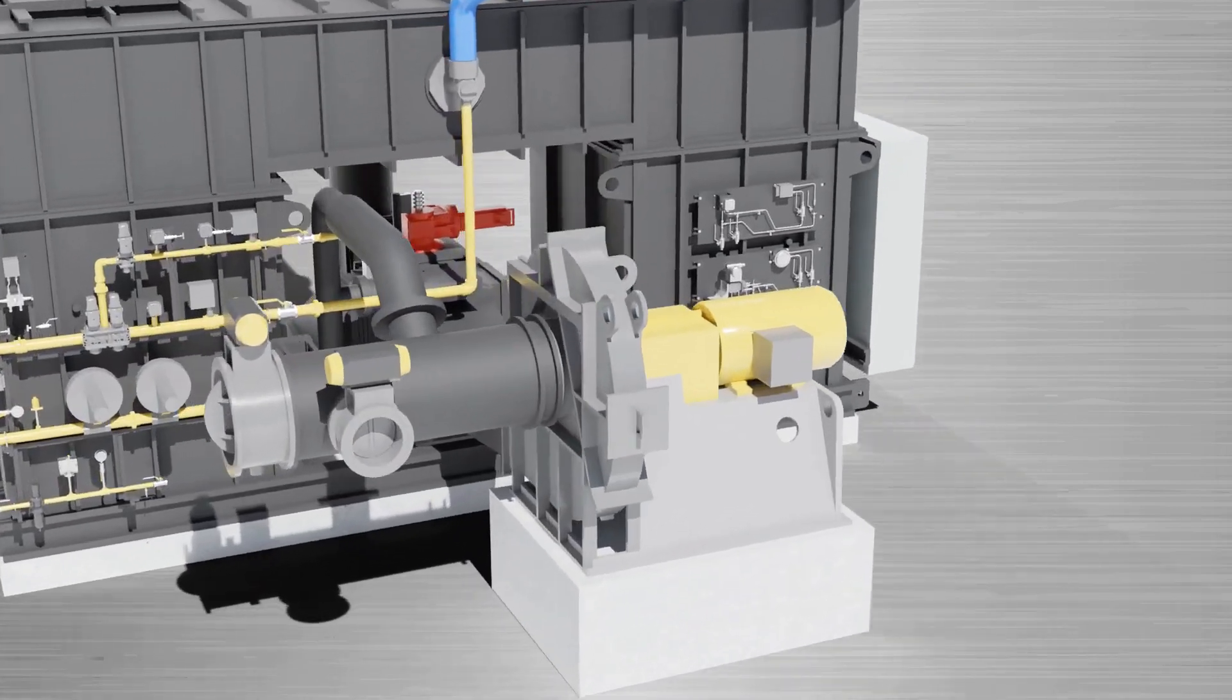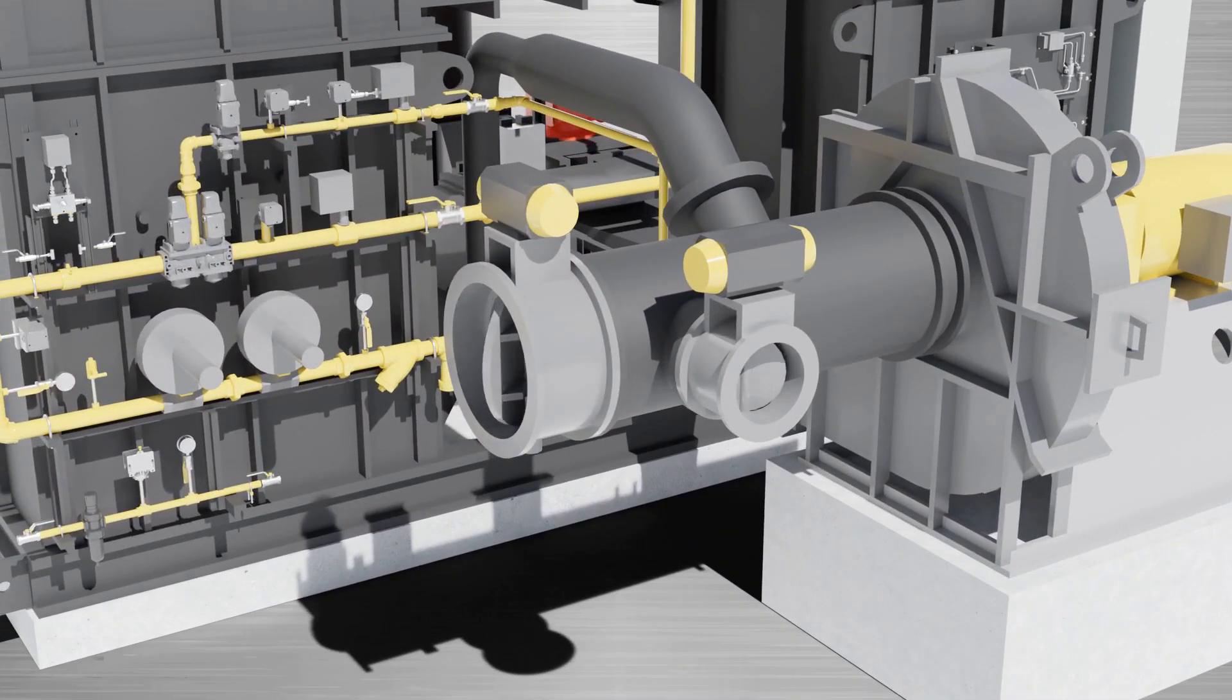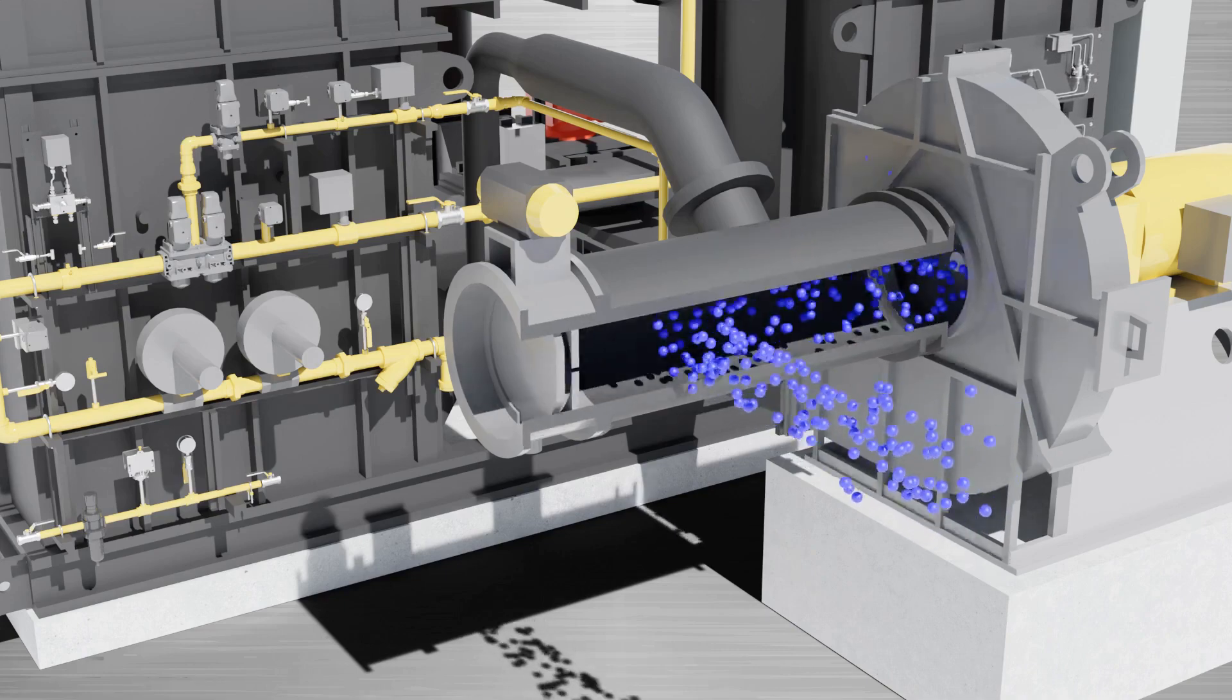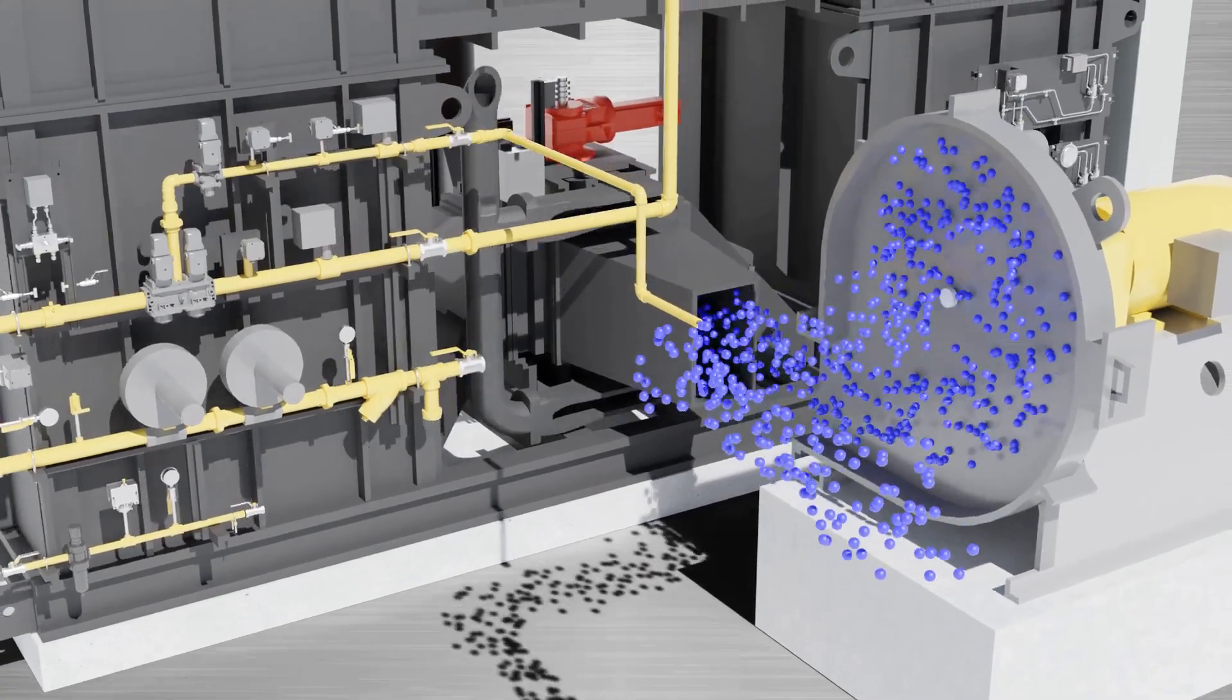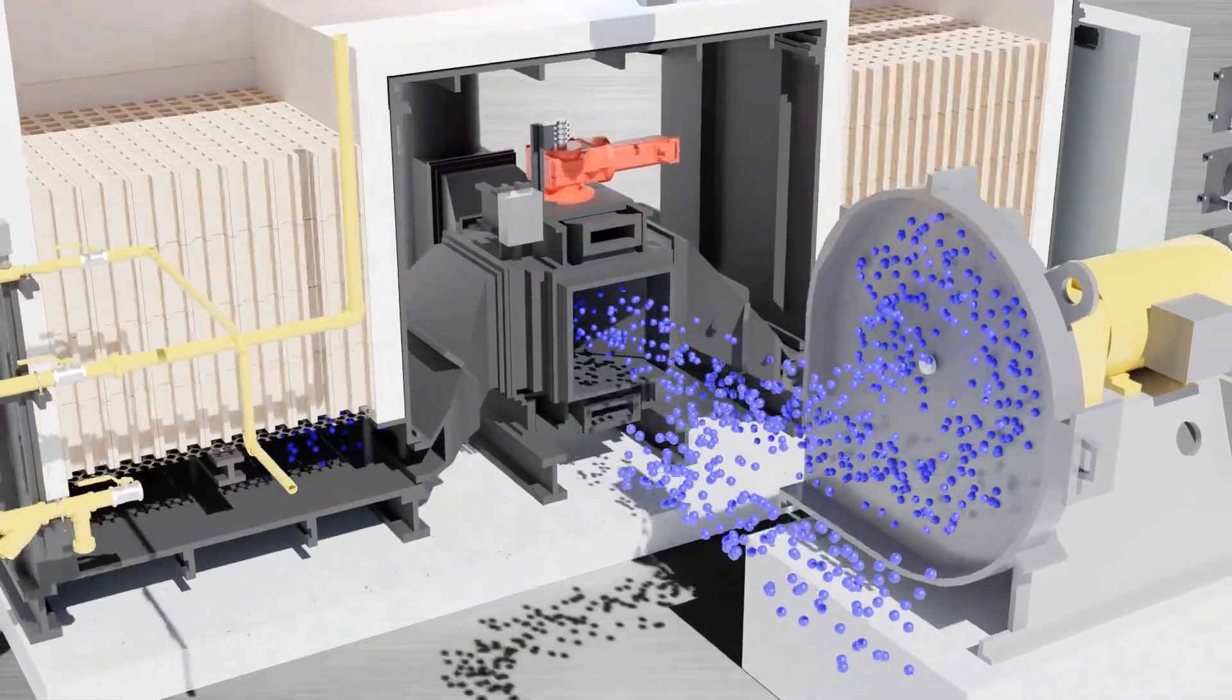Now let's take a look at the operation of the RTO. To begin preheating, the process damper is closed and the makeup air damper is opened. The process blower purges the vessel and begins to preheat the media using ambient air flow from the makeup air damper.